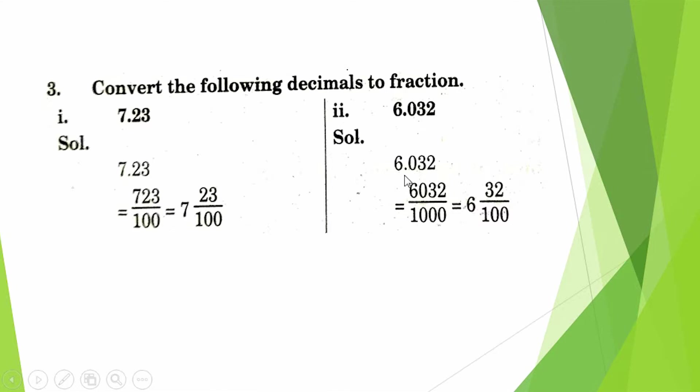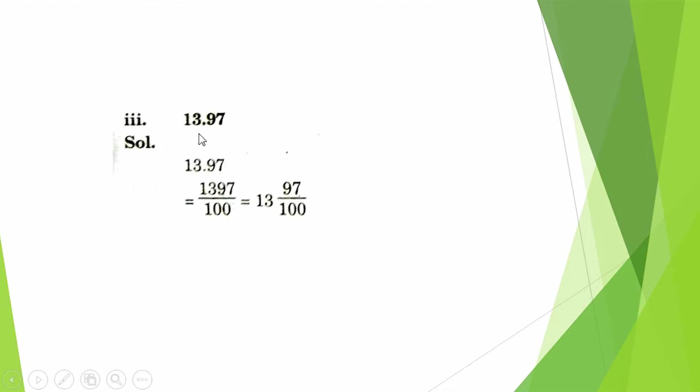6.032. We draw 1 at the place of the point and draw zeros. When we divide 6032 by 1000, the answer is 6 and 32/1000.